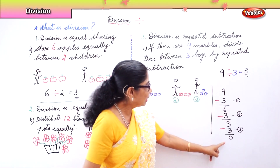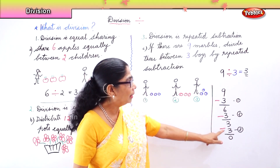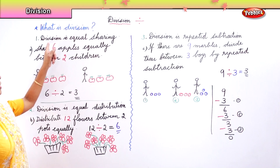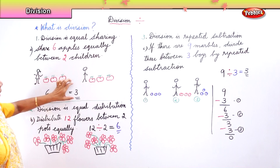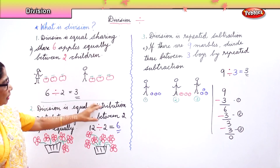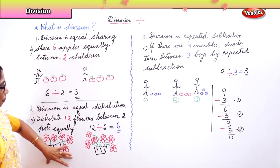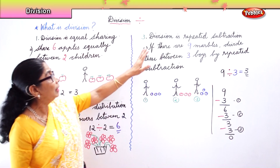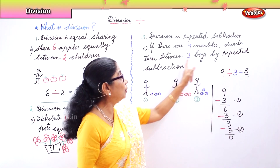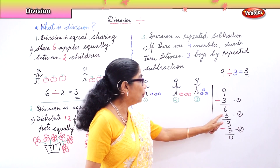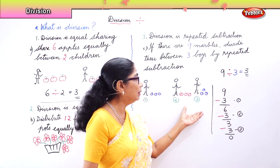What is division? Repeatedly we subtracted three, another three, another three. Division is equal sharing — we shared six apples between two children, they got three each. Division is equal distribution — we distributed twelve flowers between two pots, each pot got six flowers. The third: division is repeated subtraction — we had nine marbles between three boys, we gave each boy three, three, three.